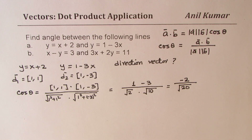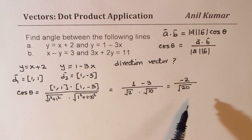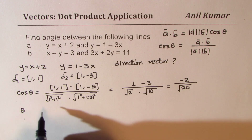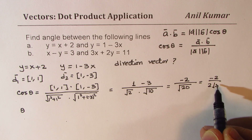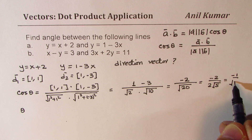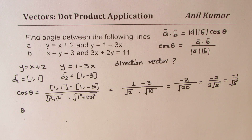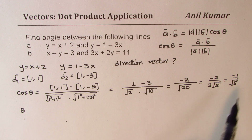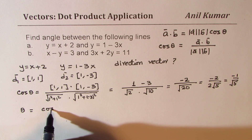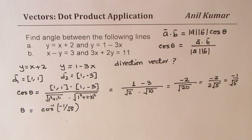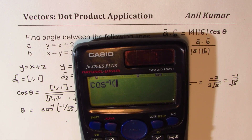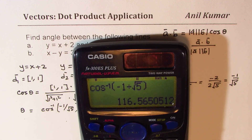Since we have to use the calculator, we can find this angle using it. Doing the dot product, we get 1 times 1 as 1 and 1 times minus 3 as minus 3, giving minus 2. The magnitude of the first vector is square root of 2, and 1 squared plus 9 is 10, so we have minus 2 over square root of 20. Simplifying, we get minus 1 over square root of 5. So theta equals cos inverse of minus 1 over square root of 5, which gives 116.56 degrees.